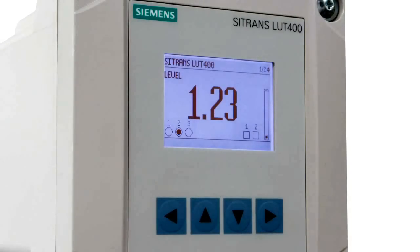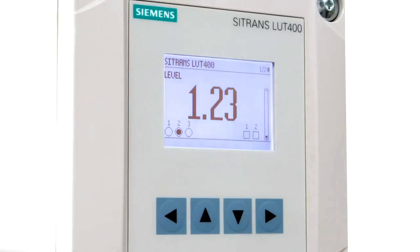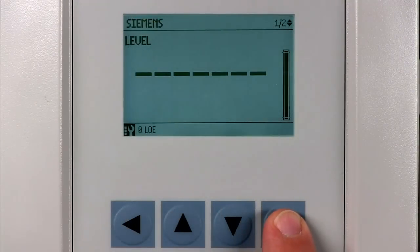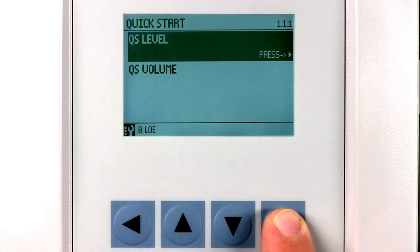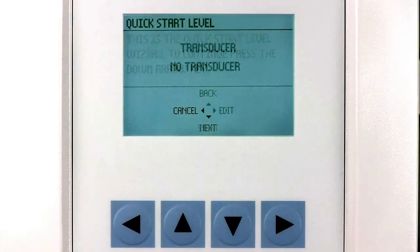The Citrans LUT400 Quick Start Level Wizard gets you measuring in less than a minute. Press the right arrow four times to access the Quick Start Level menu. Then press the down arrow to start the wizard.